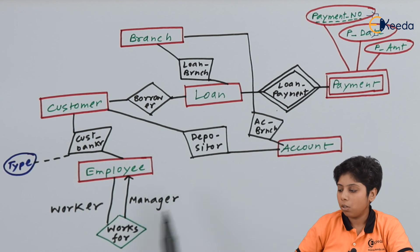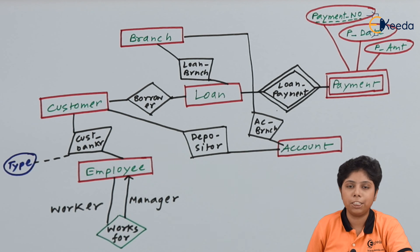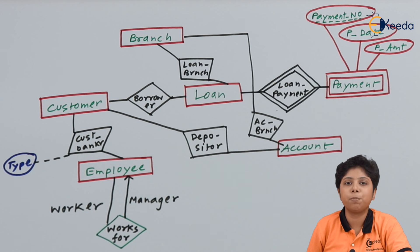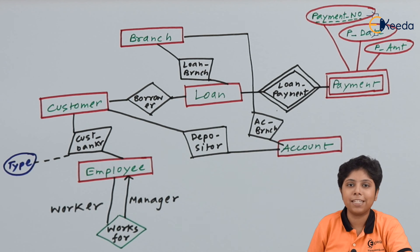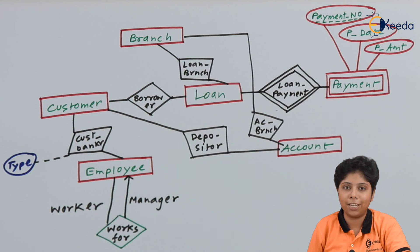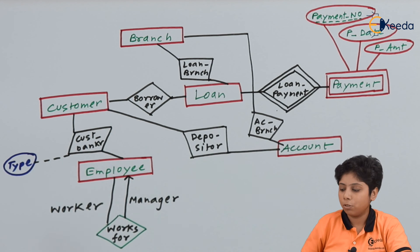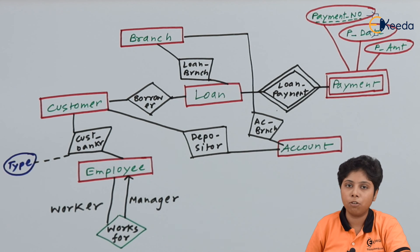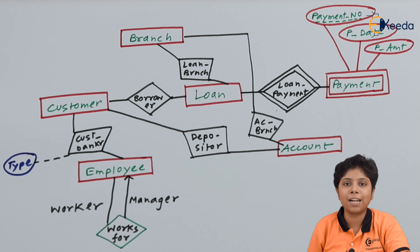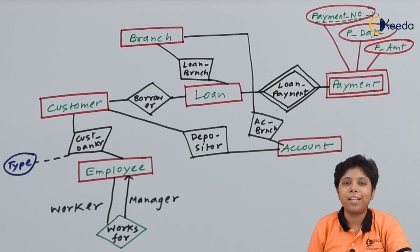We should keep in mind that attributes can be added to relationships for specialized needs. The account entity also has an ISA relationship with savings and checking subclasses, but this is only part of the account specialization and has no direct relationships with other entities. A customer is a depositor to the account, which can be savings or checking, but the primary relationship is with the superclass Account, not the subclasses.